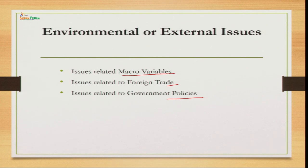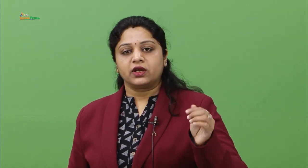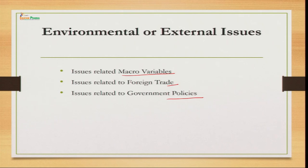To summarize the scope of managerial economics — what all comes under its preview — we have internal and external issues. In internal issues, we talk about each aspect starting from the demand of the commodity up to capital management. In external issues, we start with macroeconomic variables, then companies in import and export get a fair idea about international trade, and finally we look at government policies because governments also have a lot of impact on the working of any business.